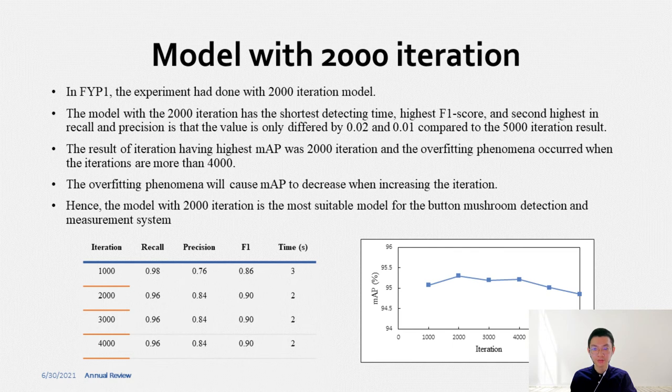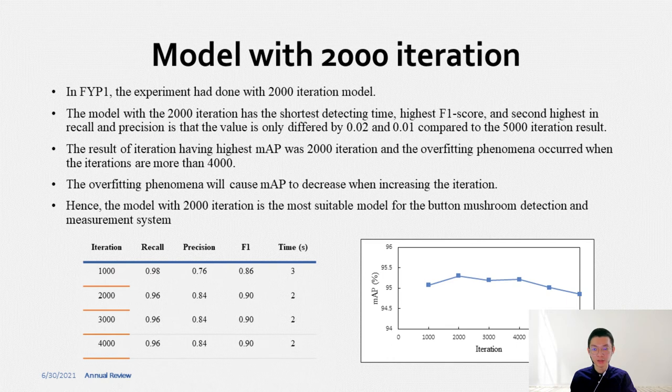This is the finding for the best trained model done during FYP1. The model with 2000 iterations has the shortest detection time, highest F1 score, and second highest recall and precision. The value is only differed by 0.02 and 0.01 compared to the 5000 iteration result. The model with 2000 iterations also has the highest mAP. Hence, the model with 2000 iterations is the most suitable model for the system.